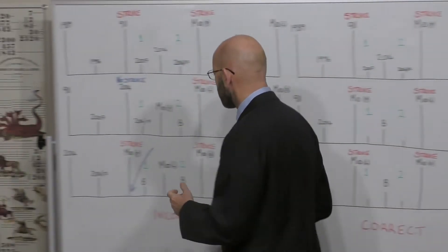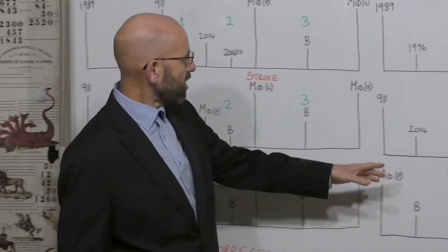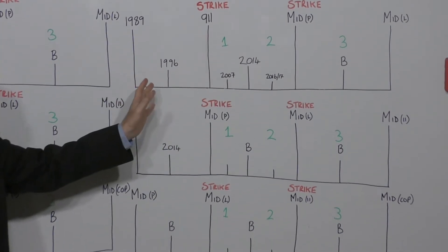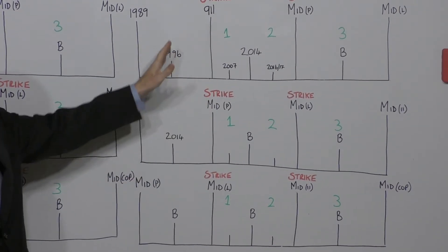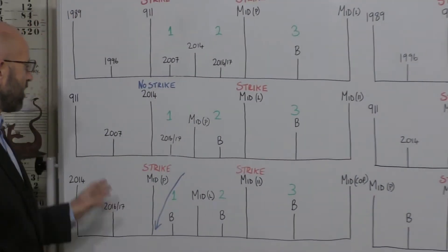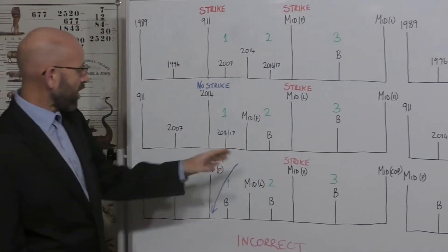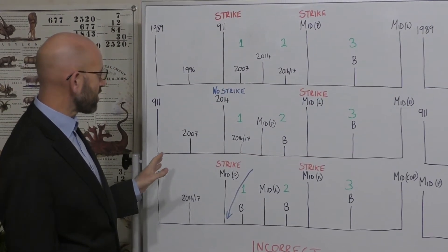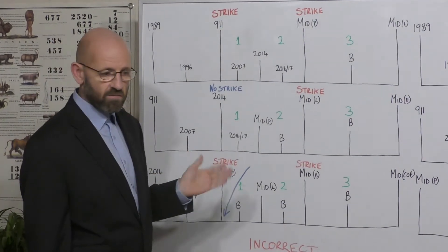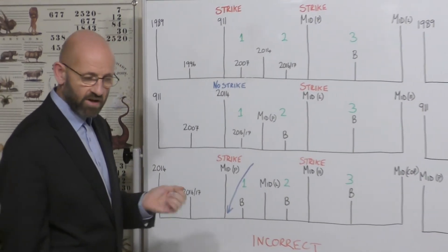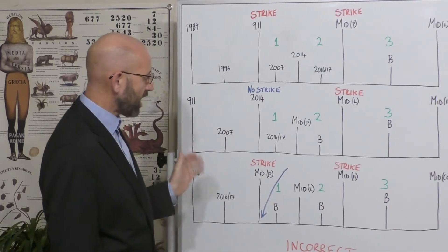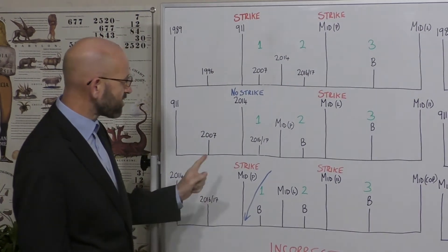Before we begin, I just want to explain the board. This is the illustration here, is the correct illustration as we understand it, based upon the time of ignorance for the priests, the Levites and the 11th hour workers. And this is an illustration of how a brother across the seas understands it and he's asking this question. I don't believe he's asking it in the wrong manner, he's truly struggling with this concept so hopefully we can help him to see why this is incorrect.